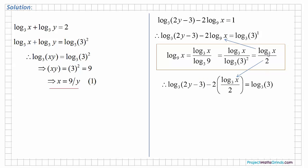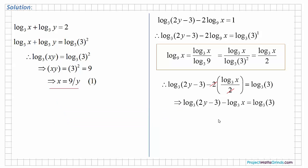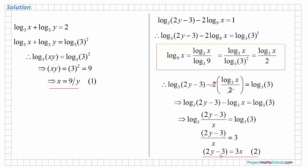We substitute this back into the original equation. The 2's cancel and we are left with the following. The log of x minus the log of y is the same as the log of x over y, so we can write log of 2y minus 3 over x to the base 3 equals the log of 3 to the base 3. Equating the two expressions gives us 2y minus 3 over x equals 3, and cross multiplying gives 2y minus 3 equals 3x.